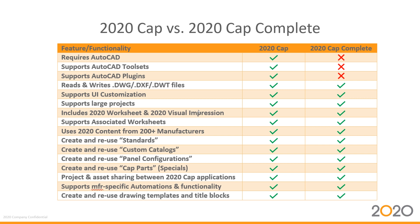Both applications support associated worksheets and support for 200-plus manufacturers. A common question is whether you can reuse your standards — both applications allow you to create and reuse standards, custom catalogs, and panel configurations. You can also create and reuse cap parts in each application. There is project and asset sharing between the two, manufacturer-specific automations and functionality in both, and you can create and reuse drawing templates and title blocks, which is a big deal for individual dealers.